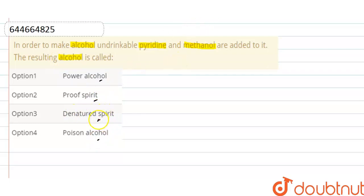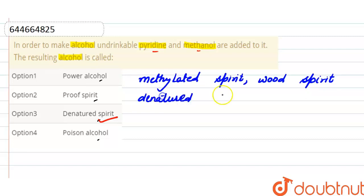Denatured spirit is the alcohol that is formed by adding pyridine and methanol. This denatured spirit is also known as methylated spirit, wood spirit, and denatured rectified spirit.